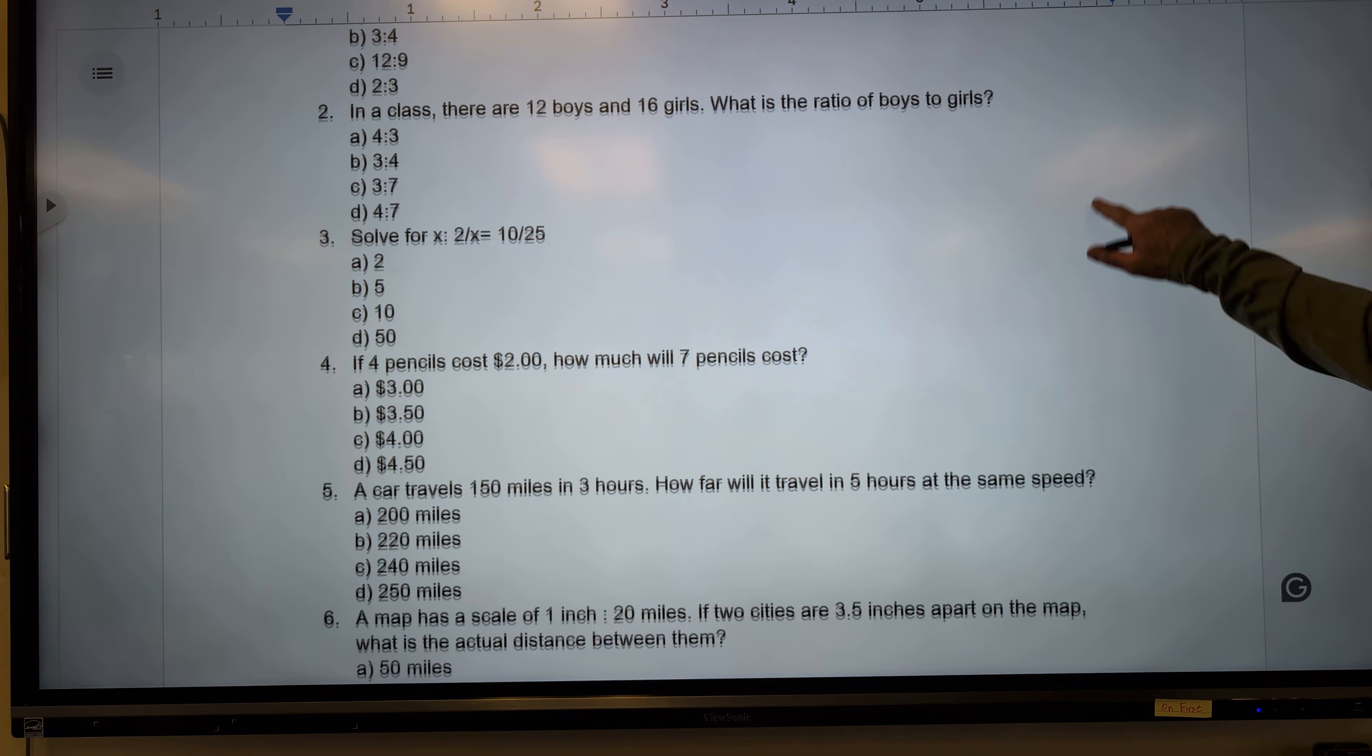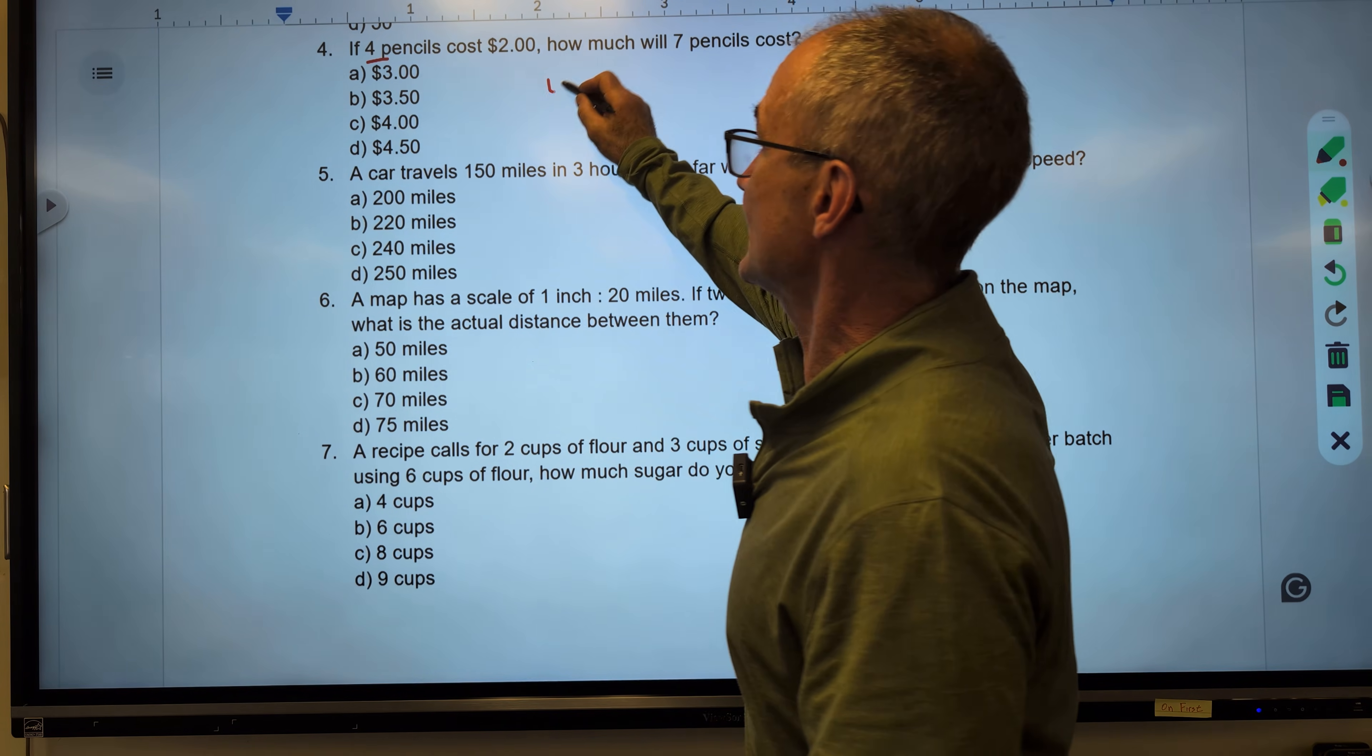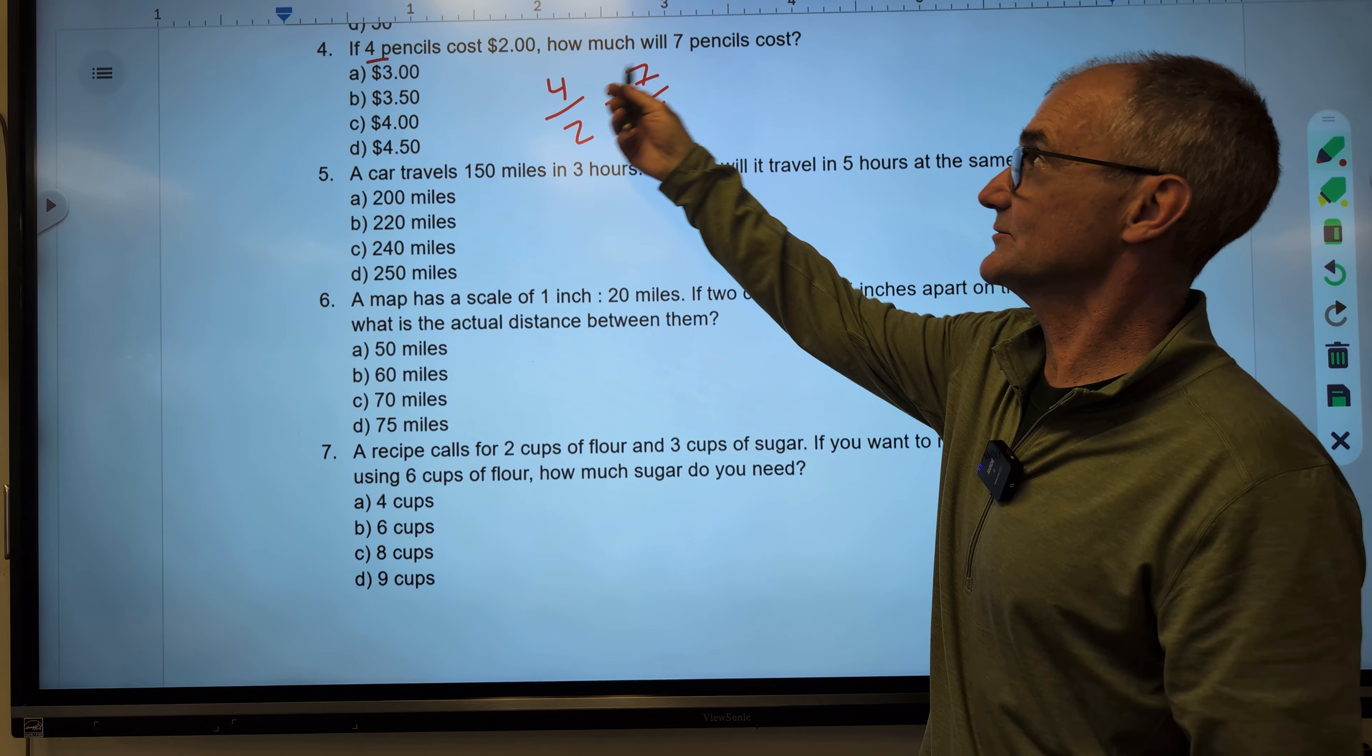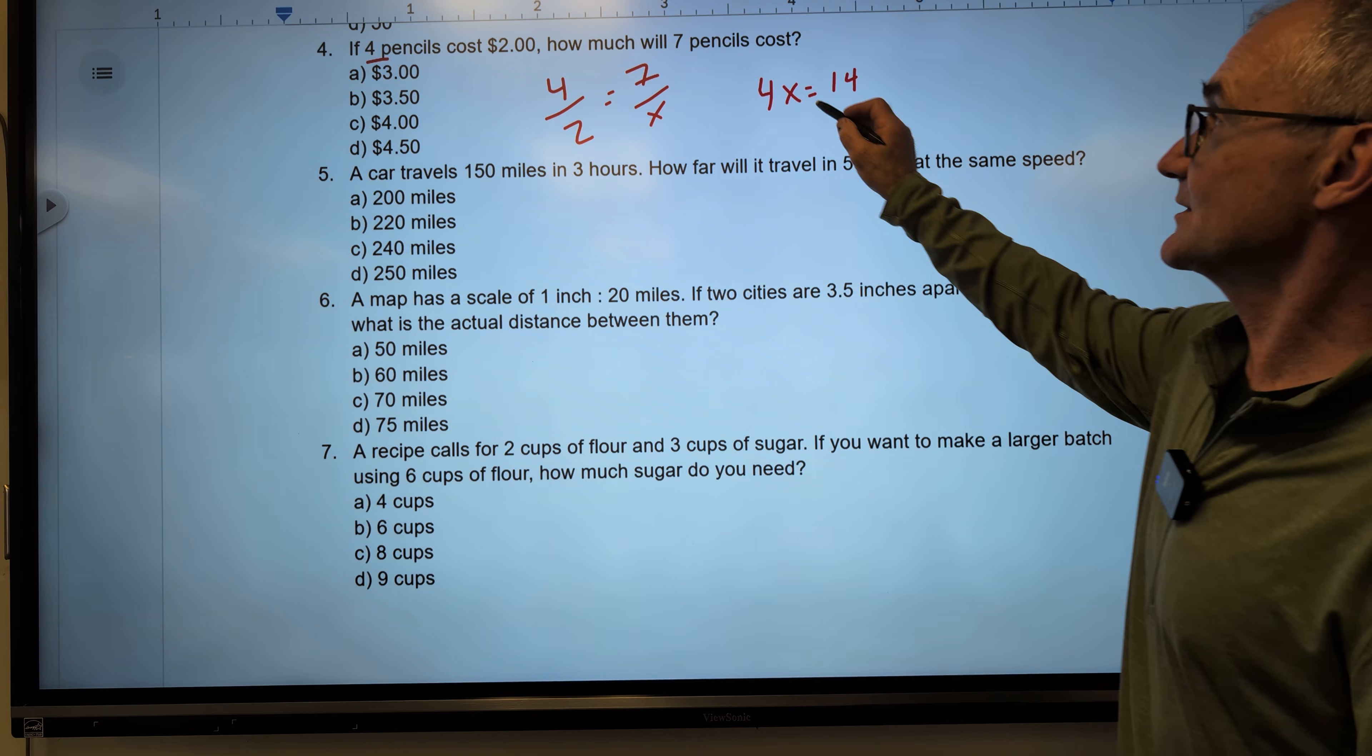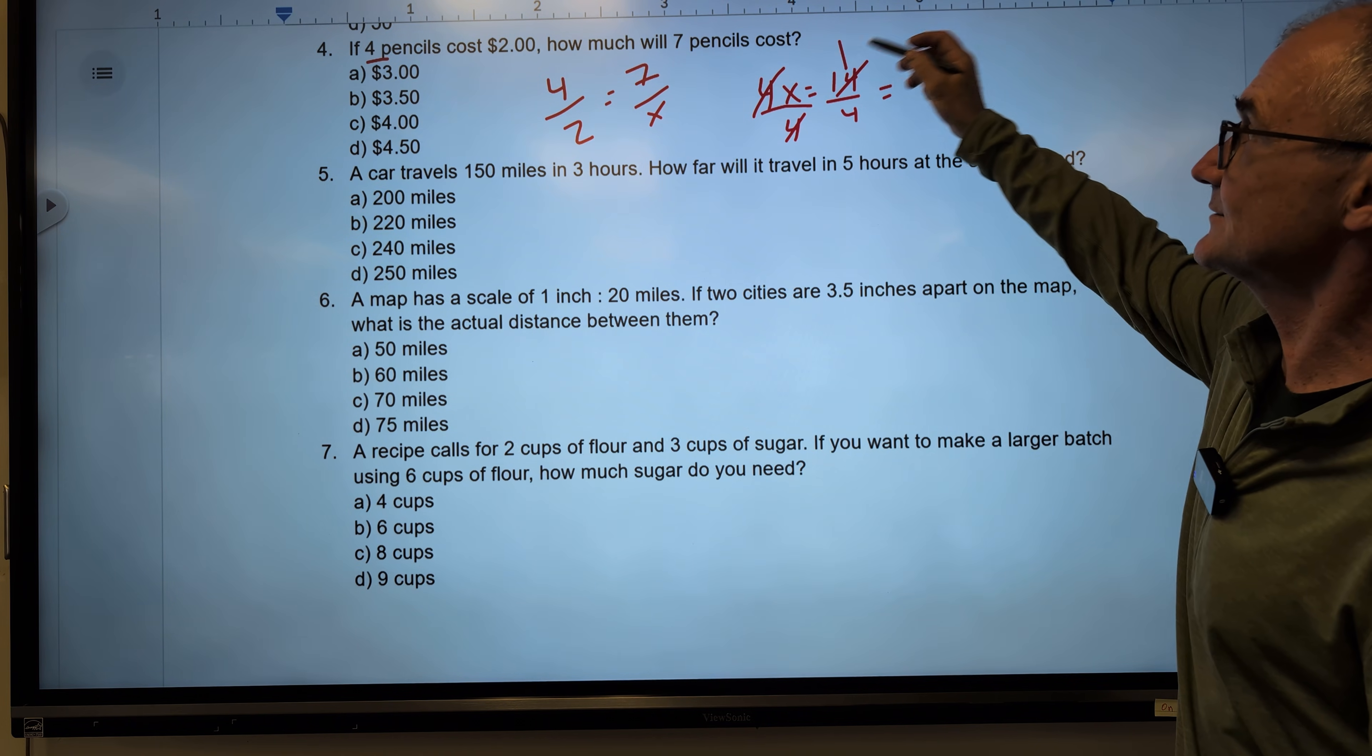Let's do a few more. Get them a little bit harder here. So on number 4 here. If 4 pencils cost $2, how much will 7 pencils cost? So I got pencils to pencils, cost to cost. I cross multiply. 4x equals 14. Divide both sides by 4. It's going to give me x by itself. 14 over 4.